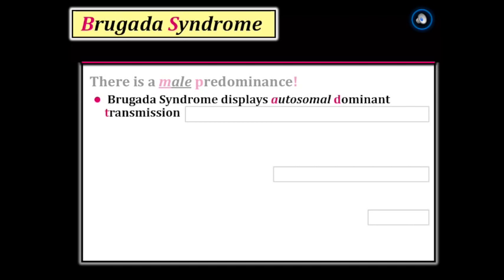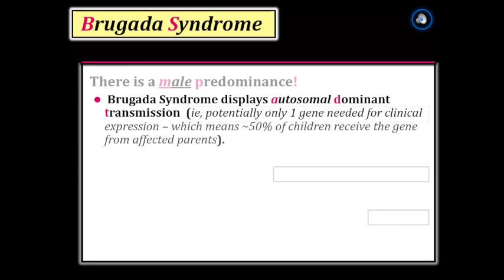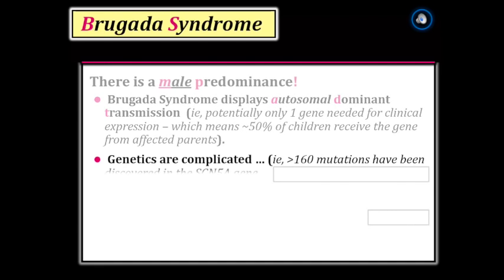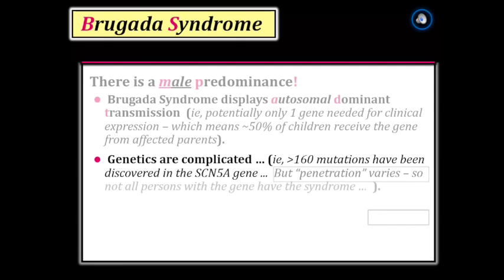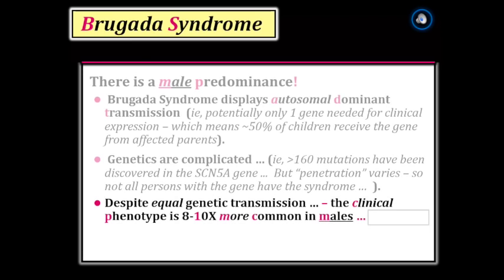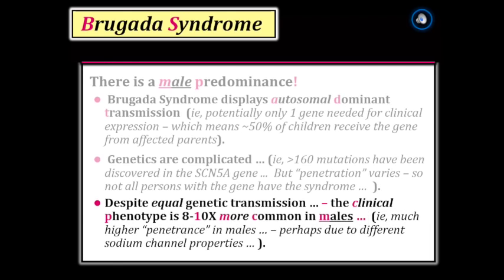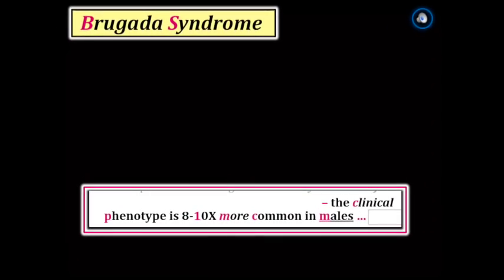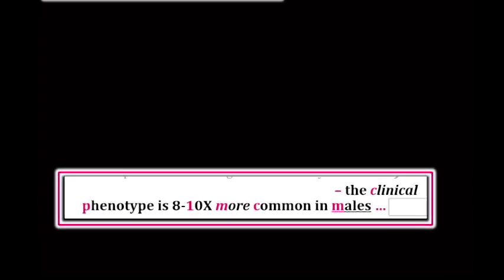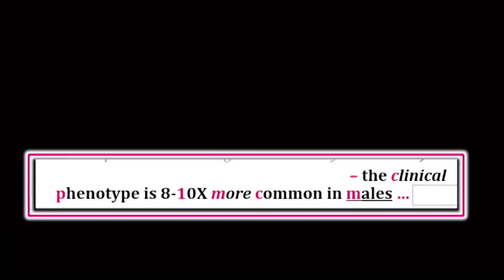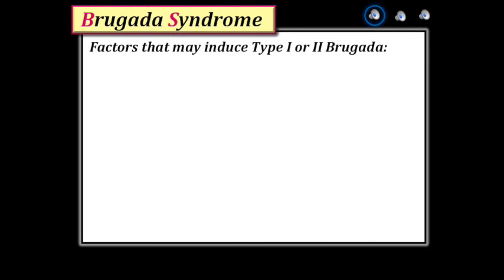Brugada syndrome displays autosomal dominant transmission, making it easy to pass the trait from parent to child. That said, the genetics are complicated, with more than 160 mutations having been discovered. Many persons with the gene for Brugada do not clinically express the syndrome. Among those who do, electrical and ECG abnormalities are far more common in males — perhaps due to different properties in sodium channel modulation. The point to remember is that you'll find clinical expression of Brugada syndrome up to 10 times more often in males.